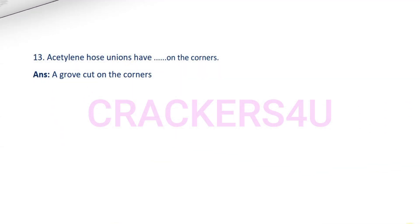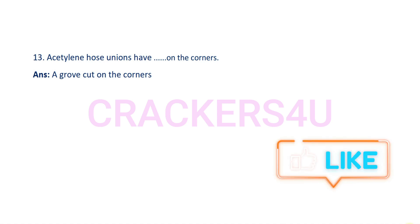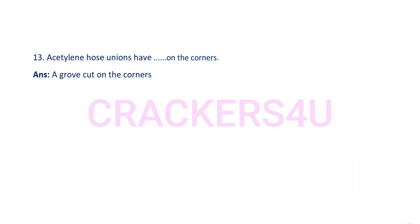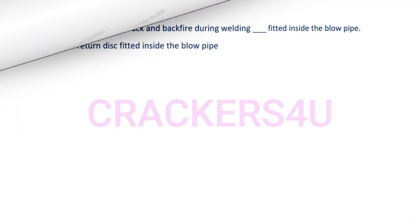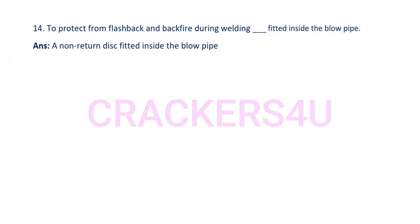Question number 13: Acetylene hose unions have dash on the corners. Answer: A groove cut on the corners.